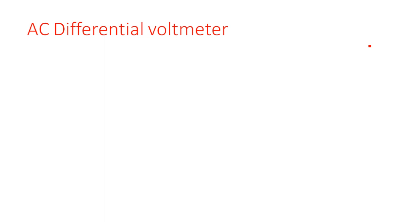Coming to AC differential voltmeter — operationally it is the same as the DC differential voltmeter, but the key difference is the term AC. As mentioned in the introduction, the meter does not respond for AC current; we should convert that AC into DC before applying it to the meter. Without converting, AC should not directly be applied to the meter, as it will not show any measurement. The AC differential voltmeter is the same as the DC differential voltmeter except for the additional equipment needed to convert AC to DC.